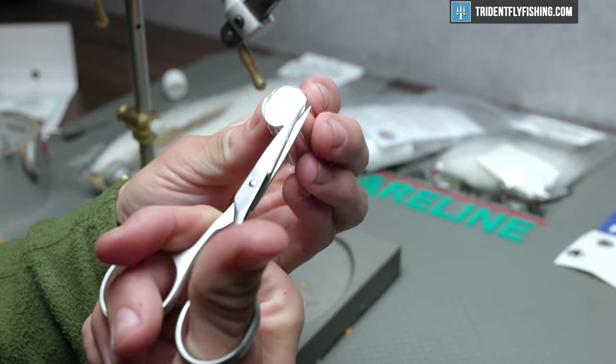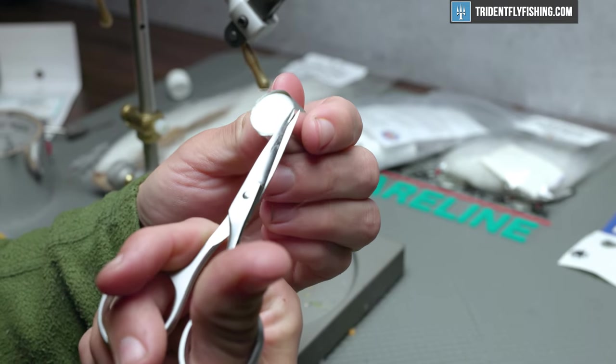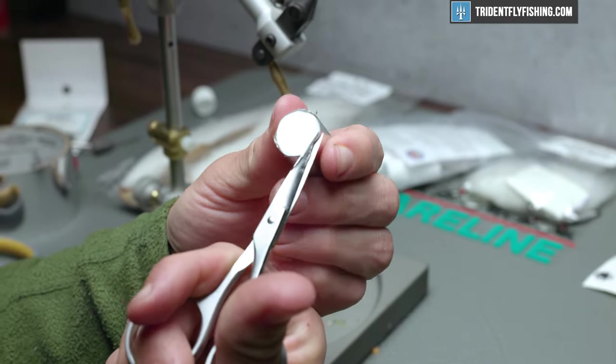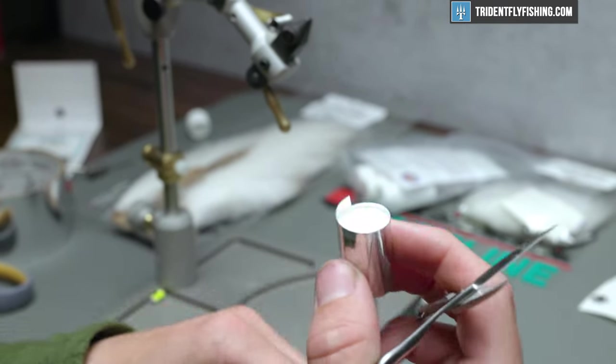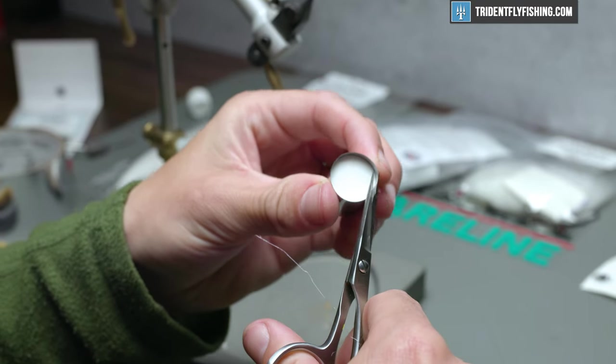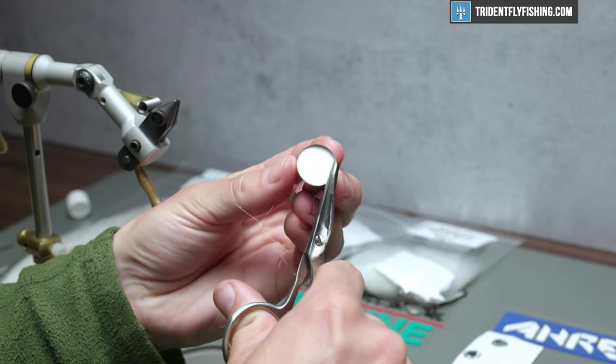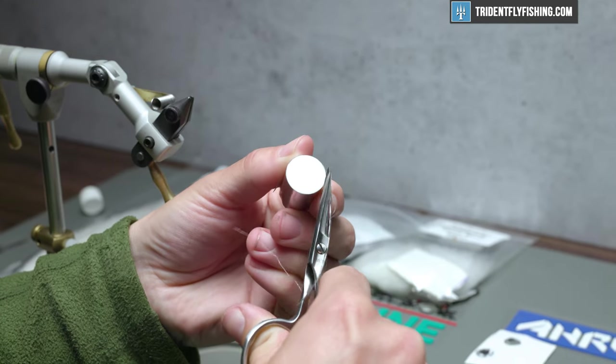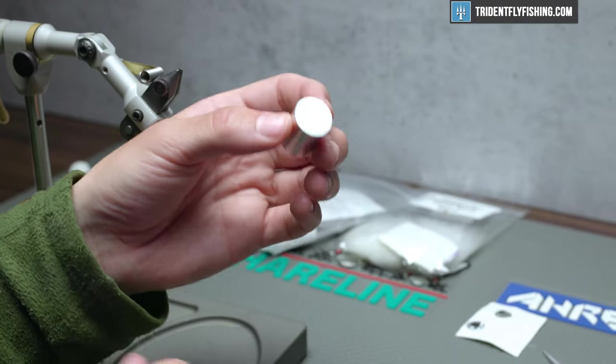When I trim this, I just use the foam as a guide and trim all the way around. You want to make this as neat as you can, but it ultimately doesn't make a huge difference, I would assume. Roll this on until you're happy with it. This is going to be the clean side. We're going to use that up front of the fly.